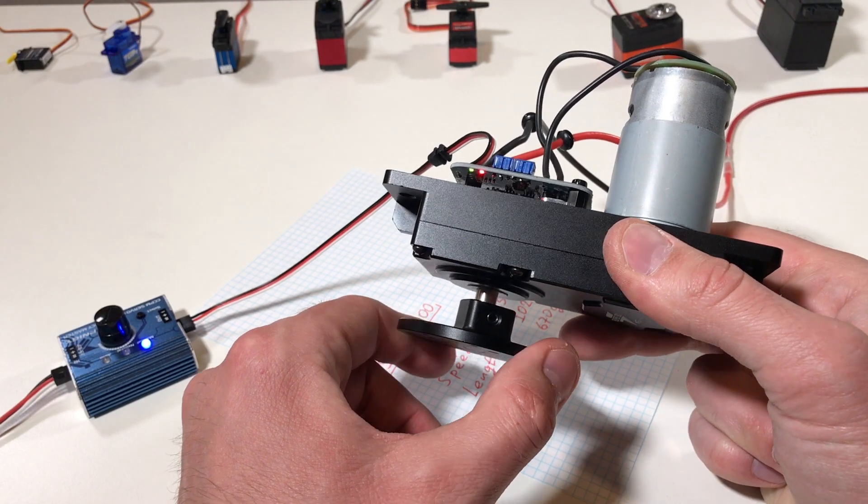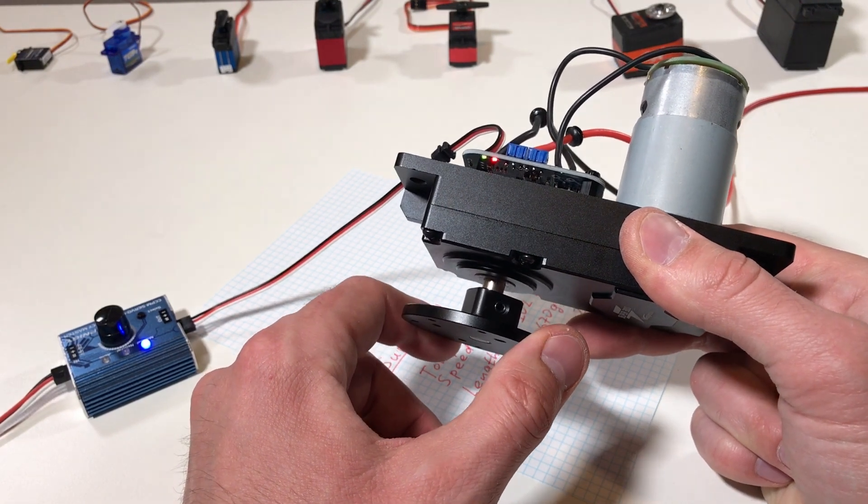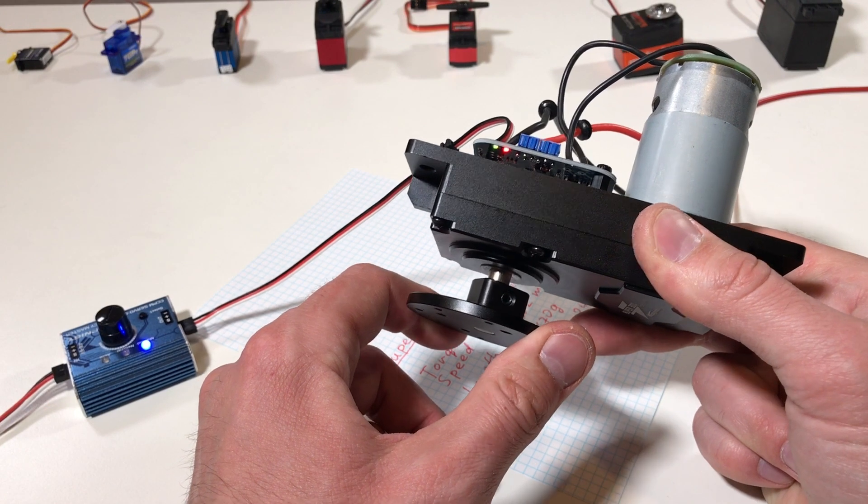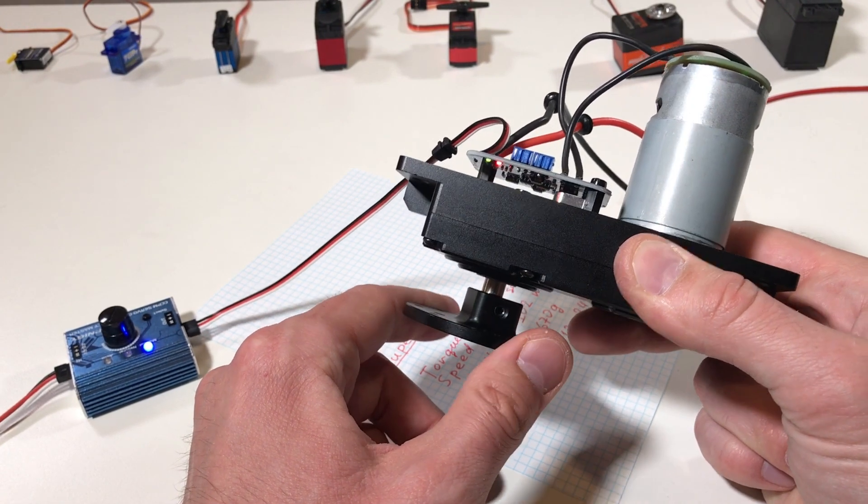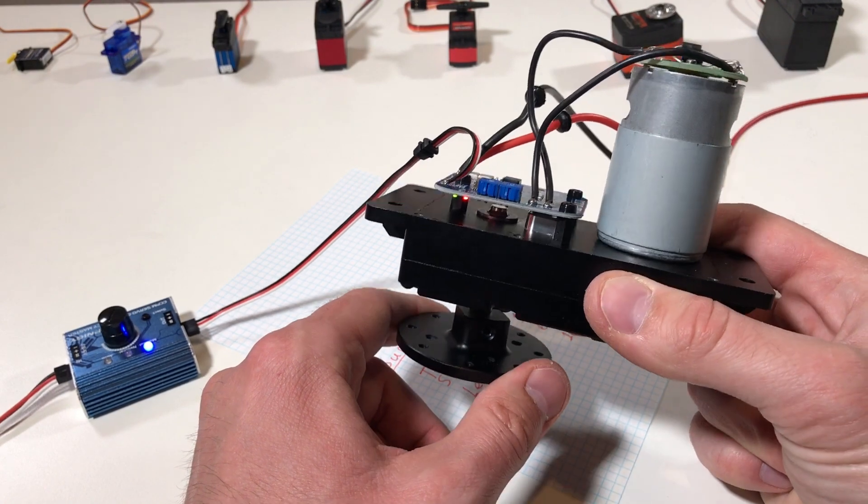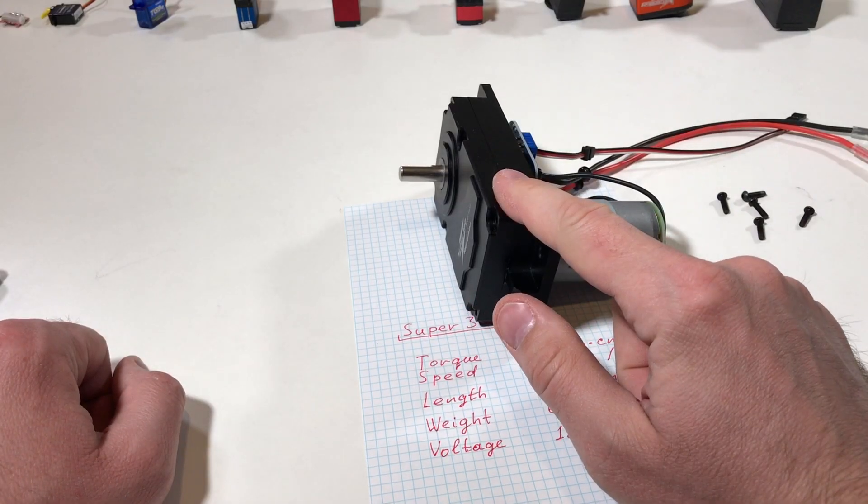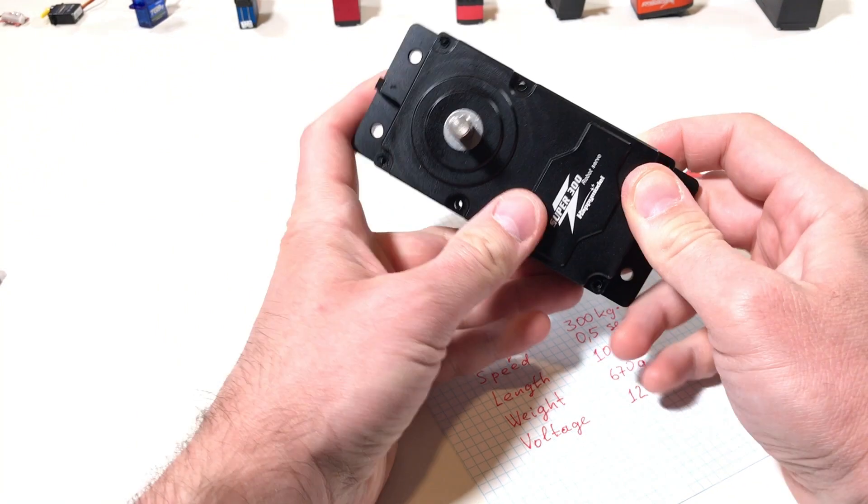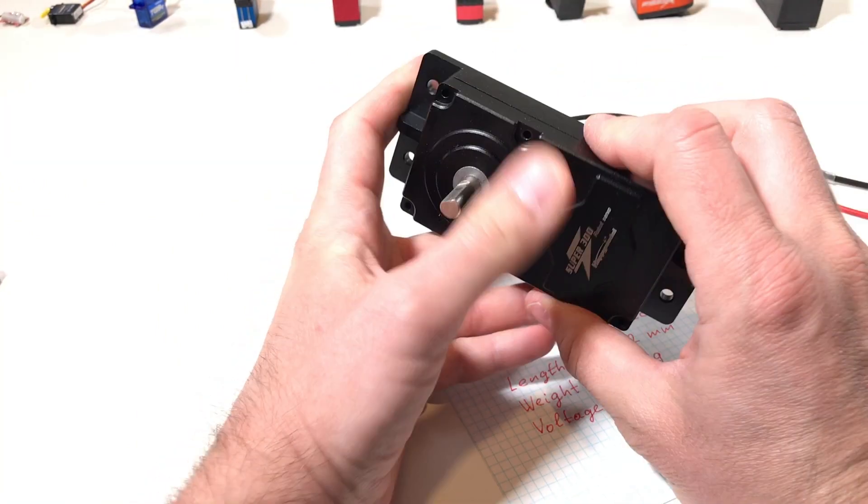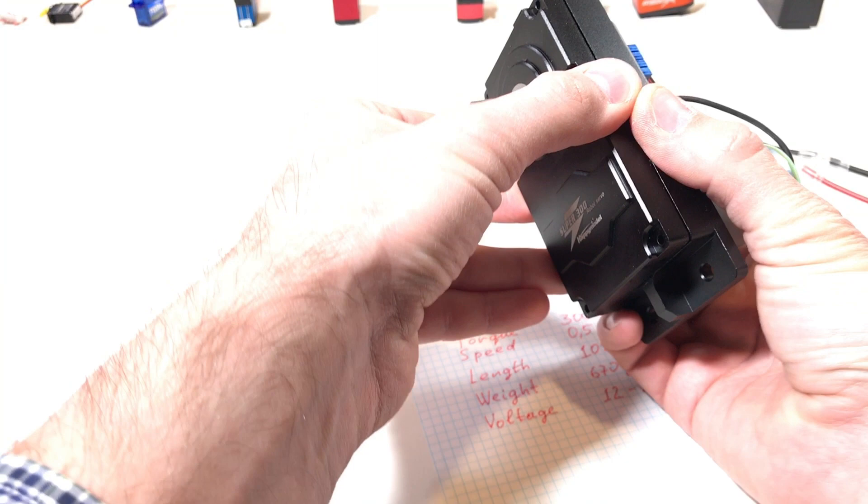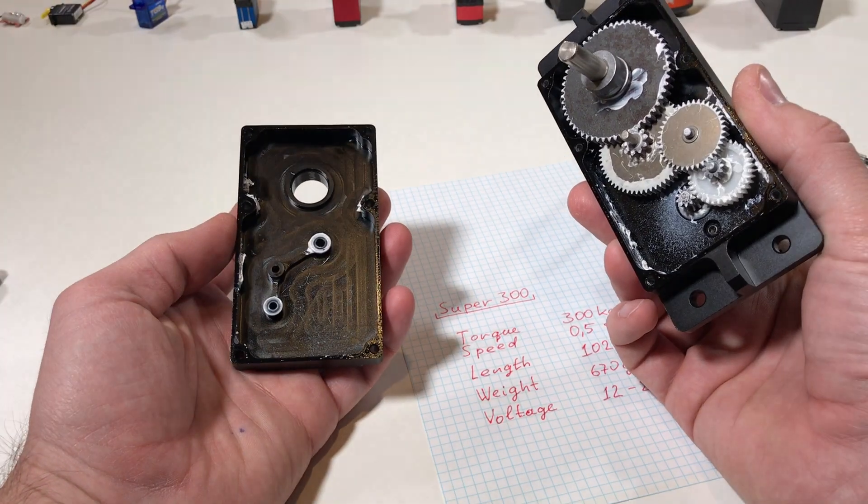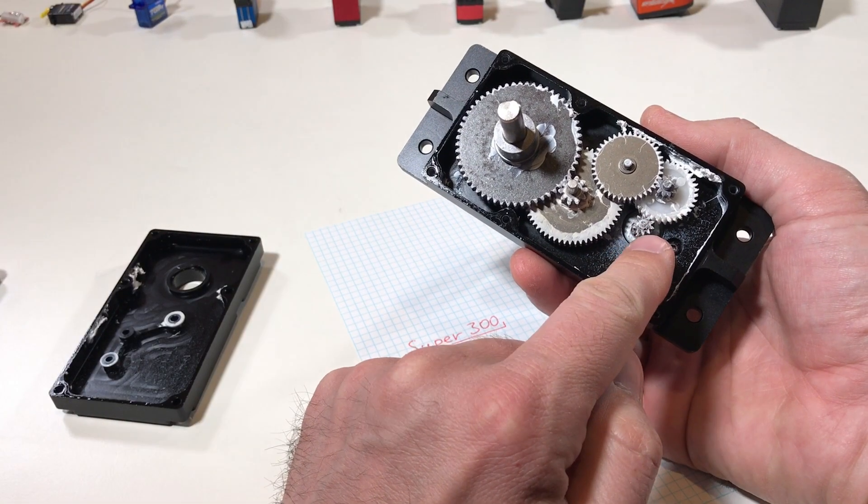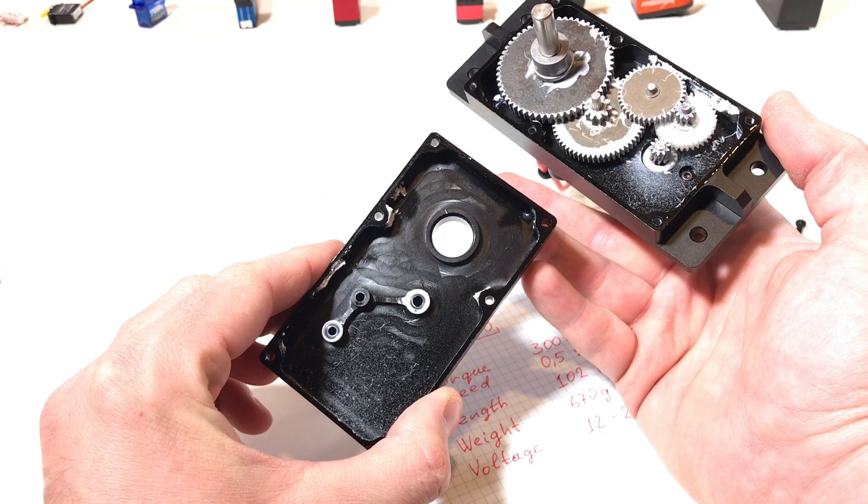I think in this gearbox there are no bearings, at least there are no bearings on the output shaft, because this output shaft moves like crazy. This is unfortunate. I would like to see what is inside of this gearbox, so I dismounted these screws and now we can try to open it without breaking everything. I hope it's possible.